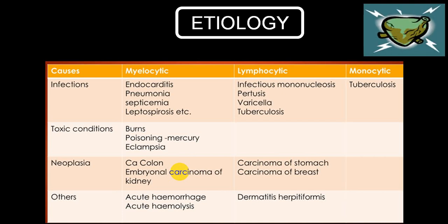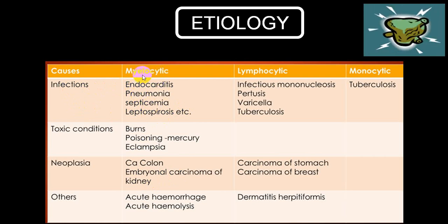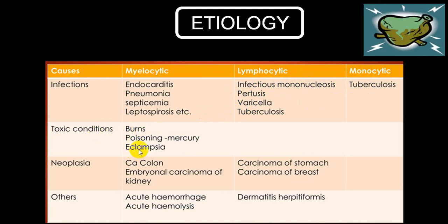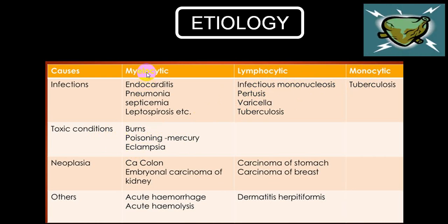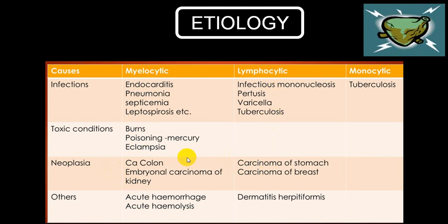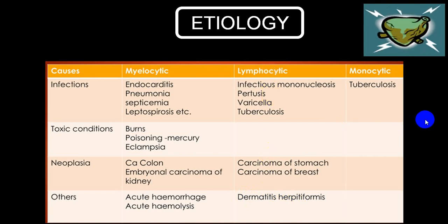When you get blast cells, we call that acute leukemia. As far as etiology is concerned, the most common etiology is infections. Among infections, endocarditis, pneumonia, septicemia, and leptospirosis give rise to myelocytic series, while pertussis, tuberculosis, varicella, and infectious mononucleosis can give rise to lymphocytic series. In tuberculosis you will also get monocytic series. In toxic conditions like eclampsia, mercury poisoning, and extensive burns, you get more of the myelocytic series. In carcinoma of the colon and kidney, you again get myelocytic series, and in carcinoma of the breast and stomach you get lymphocytic series.